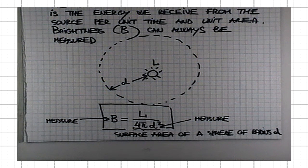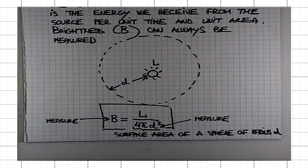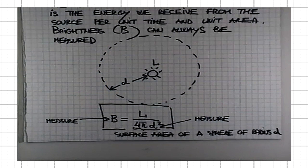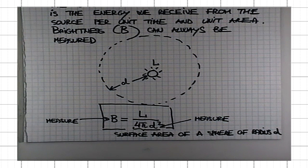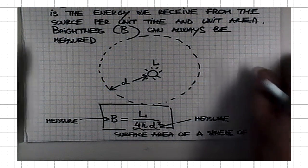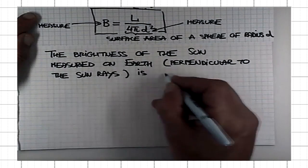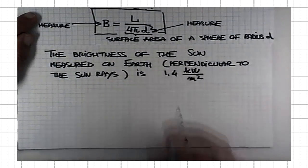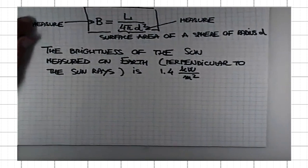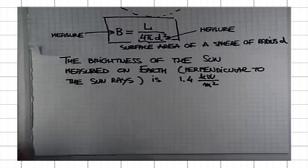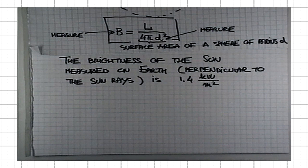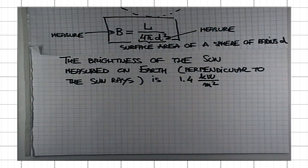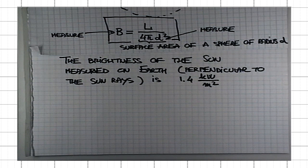The brightness of the sun here on Earth happens to be about 1.4 kilowatts per meter squared. Now, 1.4 kilowatts is the energy output of your typical electric heater that you might use to warm your room.